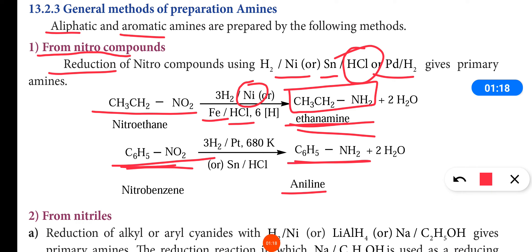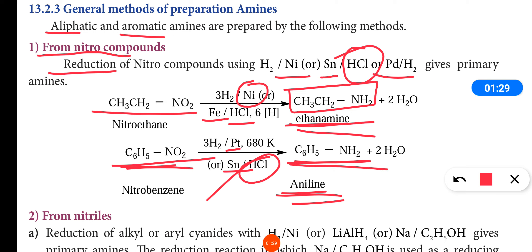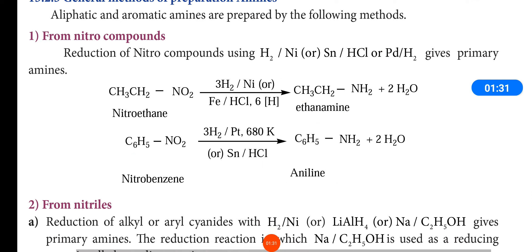Benzeneamine is the IUPAC name and aniline is the common name. For the reduction of nitrobenzene, you may take platinum or tin in acid medium, and it will form aniline.